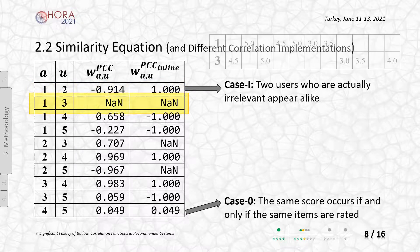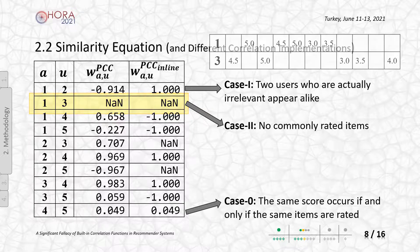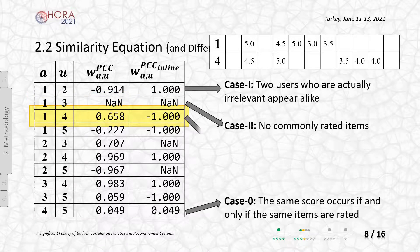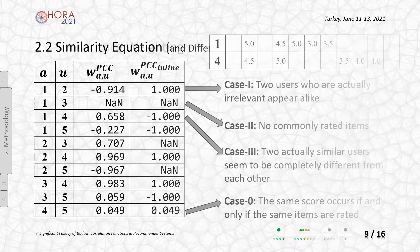The second case underlines the importance of the correlated item requirement. If users do not have common rated items, it is not possible to mention a user-based similarity. Conversely to the first case, the relation between those users falsifies the overall inference when the built-in function is utilized. Although those users have a similar sense of taste, the built-in function indicates a total negative correlation. This is also a fallacy.